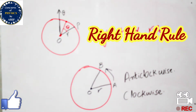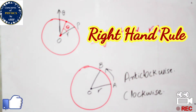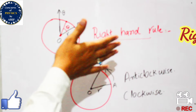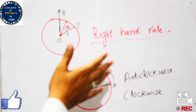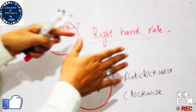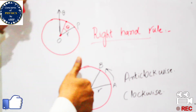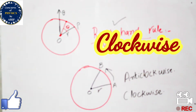To explain angular displacement, the right-hand rule is mostly used. The right-hand rule states that when a body covers a distance in the anticlockwise direction, the fingers of the right hand show the direction of motion, and the thumb of the right hand shows the direction of angular displacement. This is known as the right-hand rule for angular displacement.